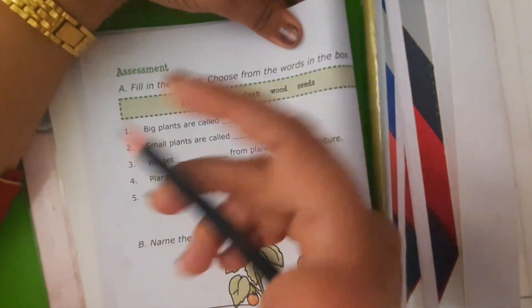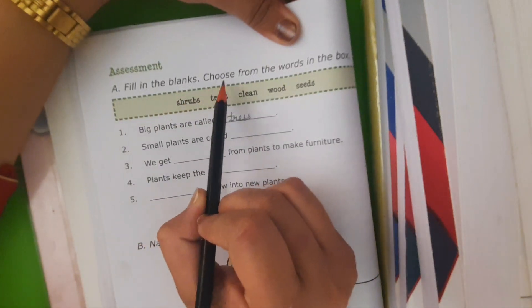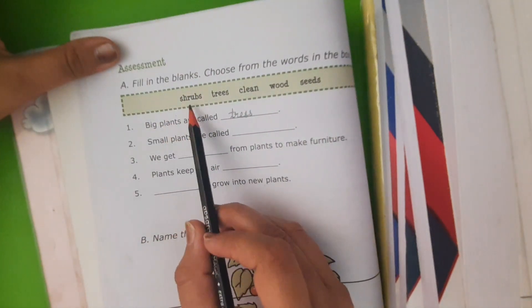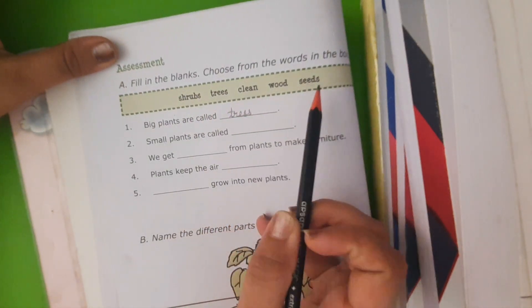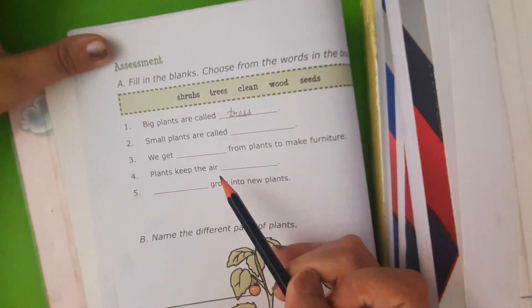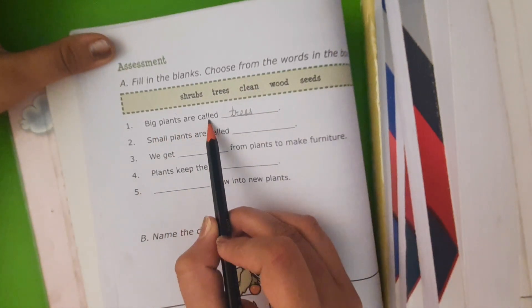First of all we are going to do fill-ups. Fill in the blanks. Choose from the words in the box. Students, here in this box some words are given. You have to choose the right word from this box and fill in the blanks.